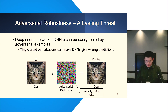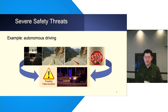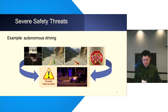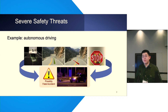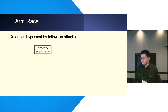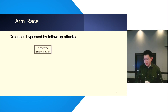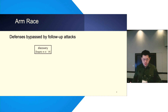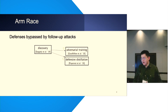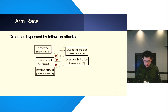In machine learning safety research, we can see that adversarial robustness is a lasting topic where powerful deep neural networks can be very easily fooled by adversarial examples — tiny corrupted perturbations that can make a model give wrong predictions. Adversarial robustness has posed severe safety threats, like in autonomous driving.